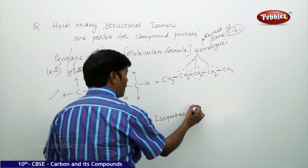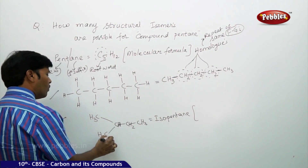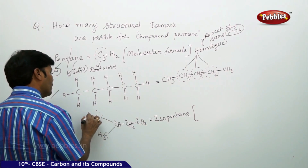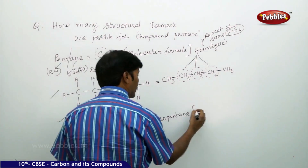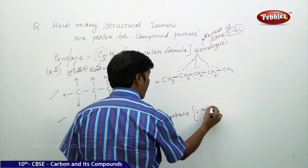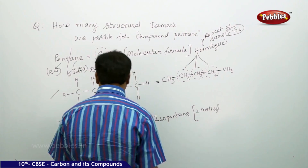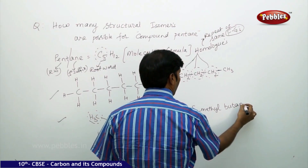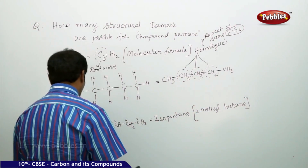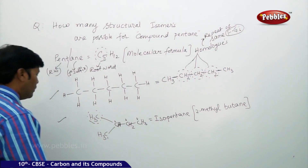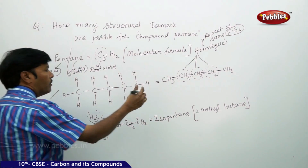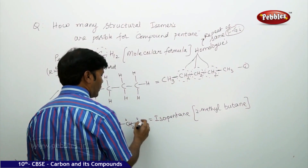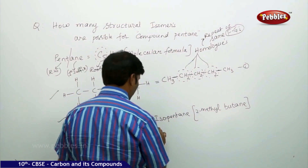If you want to write the IUPAC name, take the longest chain: 1, 2, 3, 4 — this becomes the substituent. So therefore, the IUPAC name is 2-methylbutane. This is the first structural isomer (n-pentane), and this is the second structural isomer (2-methylbutane / isopentane).